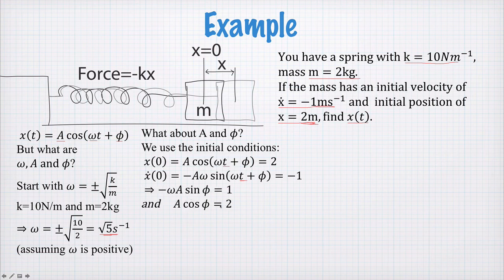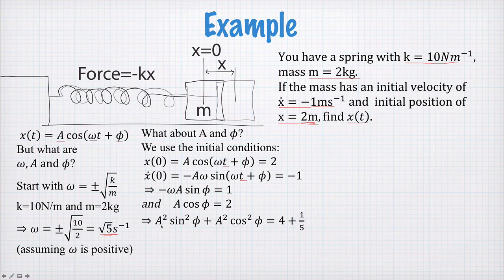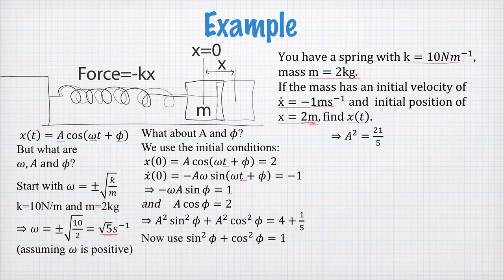And this leaves us with a pair of equations independent of time for the two unknowns φ and A. Two equations, two unknowns. We can solve these. This is how we go about doing it. First of all we square these two equations, allowing us to write an equation for the sum of A² sin²φ plus A² cos²φ. And using these two equations to get these two terms here, we find that the sum of these terms must equal to 4 from 2² and 1/5. And the fifth comes from this ω coming down underneath this one. So we use sin²φ + cos²φ = 1 and then calculate that A² must be equal to 21/5. Okay so we know the amplitude of the motion.